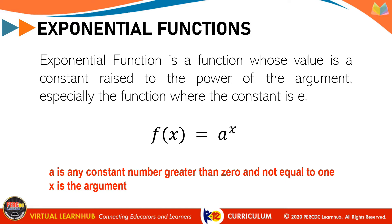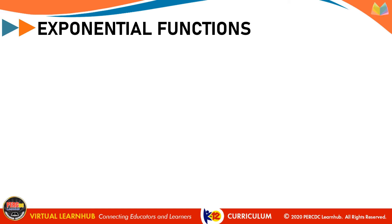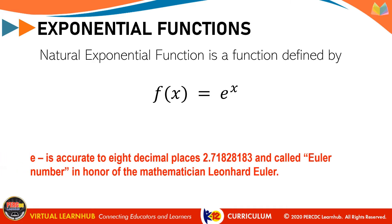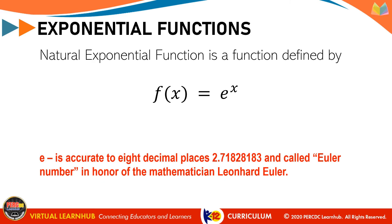There is another type of Exponential Function where its base is a constant called Euler's Number, represented by small letter e. This is what we call the Natural Exponential Function, defined by f(x) equals e raised to x, where e is accurate to 8 decimal places: 2.71828183, called Euler's Number in honor of the mathematician Leonard Euler.